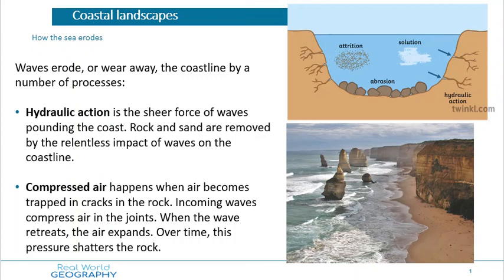Hope we're all keeping well. We just started at the coasts yesterday and we spoke about waves, constructive waves, destructive waves, the swash — the wave that hits the beach — and the backwash when the wave retreats back out to sea. We also spoke about how the west of Ireland has a rough, indented coastline because of the powerful waves off the Atlantic Ocean. Now we're going to look more specifically at the processes involved in coastal erosion — how exactly do waves erode our coast?